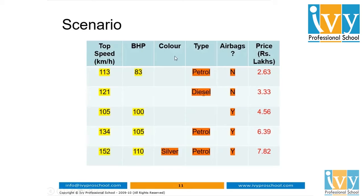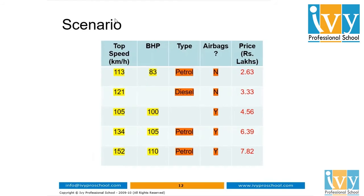Then we check if any columns contain a maximum of missing values. BHP, color, and type contain missing values, but color contains only one value and the majority are missing. In Exploratory Data Analysis, if more than 30 percent of data is missing from a column, we drop that column from the dataset.